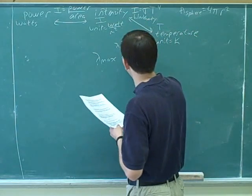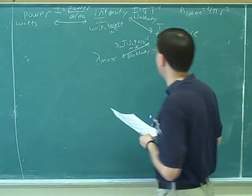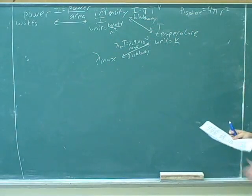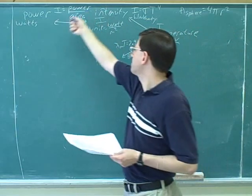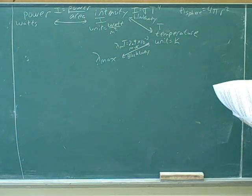And again, this is for black bodies, not for just everything. But it tells us that the m here is for max, the maximum wavelength emitted. So these two things are just for black bodies, and these are for everything. And putting these together, it will allow us to solve a lot of different types of problems.